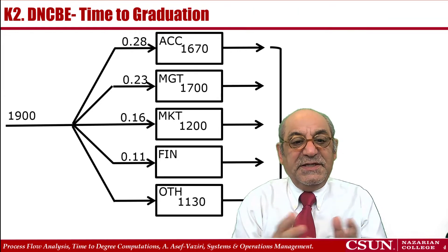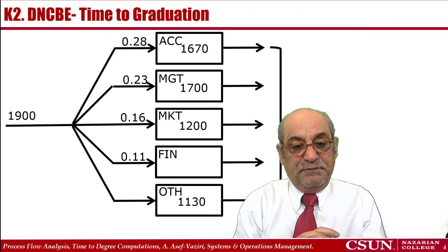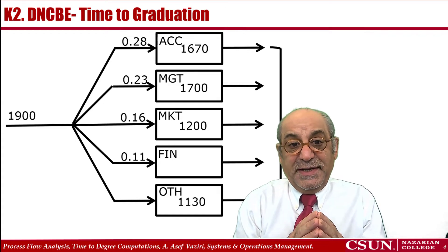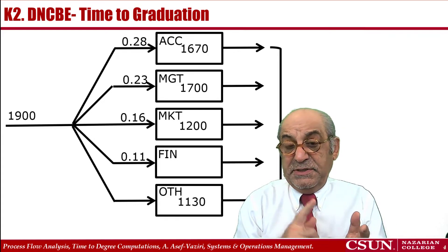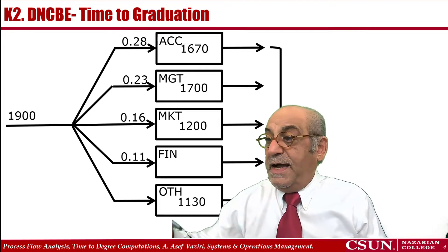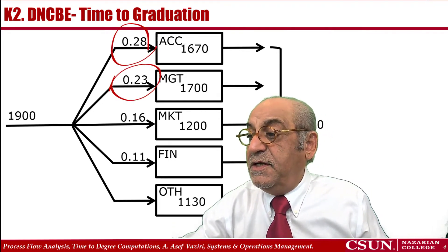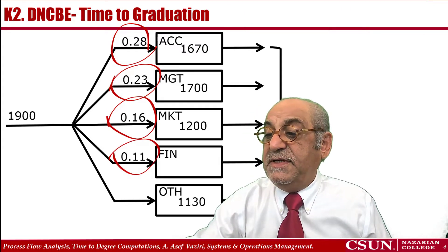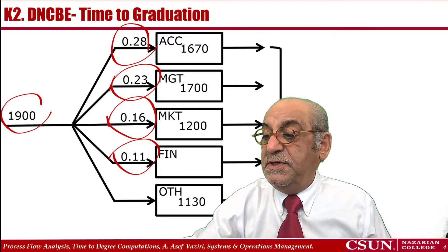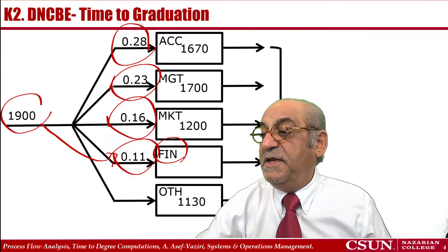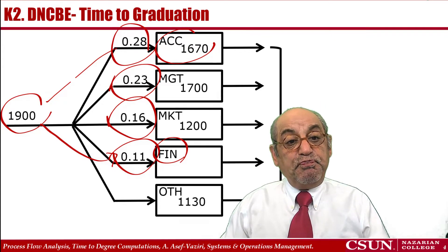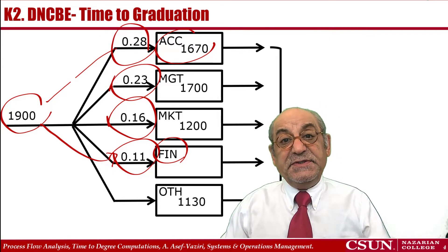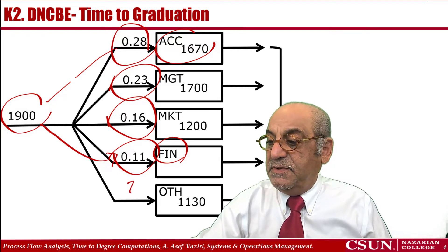Let's look at a graphical representation. We have the Department of Accounting and IAS, Department of Management, Marketing, Finance, and then three other departments: Systems and Operations Management, Business Law, and Economics. I have the percentage of incoming students: 11% belong to Finance, 28% to Accounting and Information Systems, and I have all the other percentages except one.